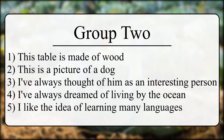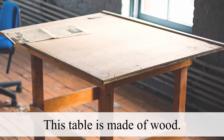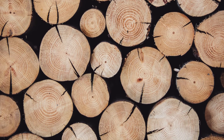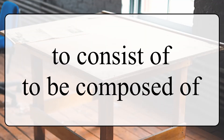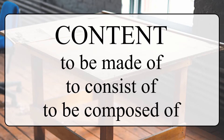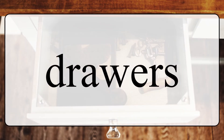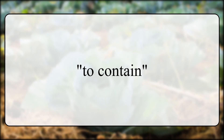Group 2. The keyword in this group is 'content'. 'This table is made of wood.' Here we're talking about the material that something is made out of. The wood is the content or material of the table — it's what the table consists of or is composed of, which is why we usually use the preposition 'of' with those verbs. Note that normally when we talk about the 'contents' of a table, we mean what's inside the drawers. We can also say: 'This table is made from wood,' 'made out of wood,' or 'made with wood.'